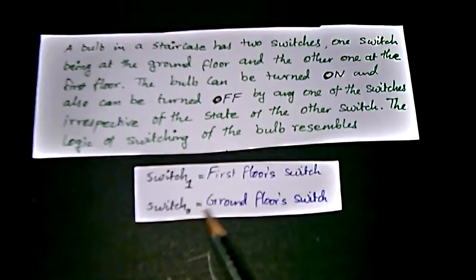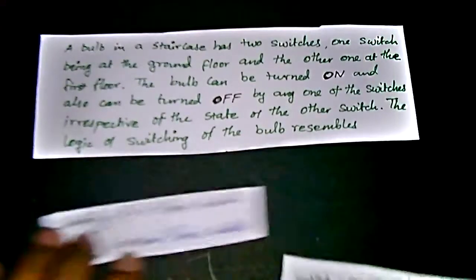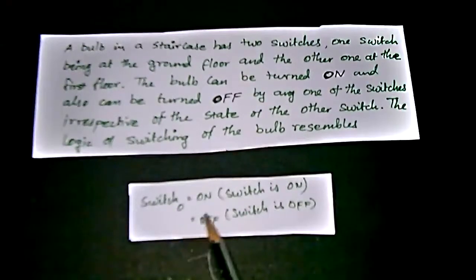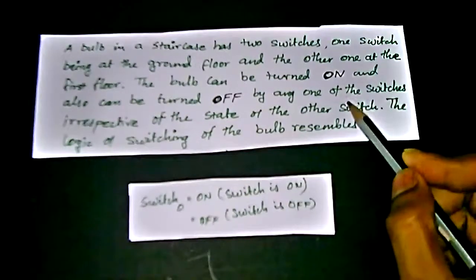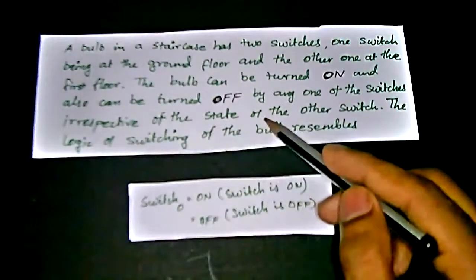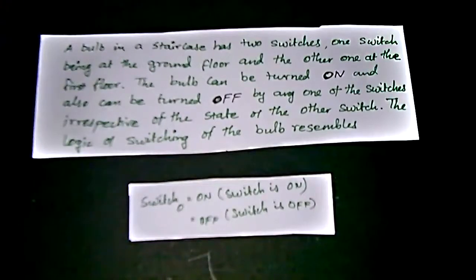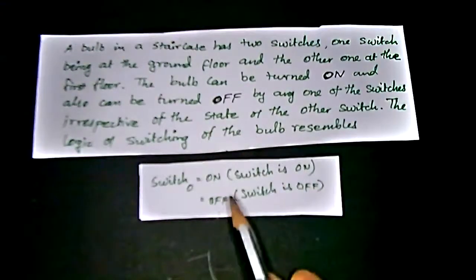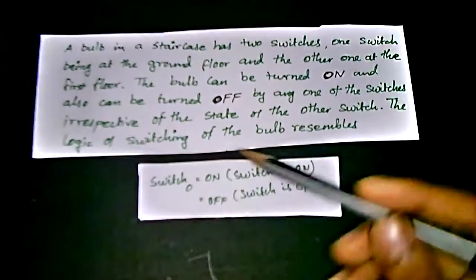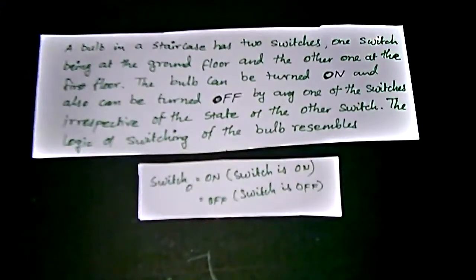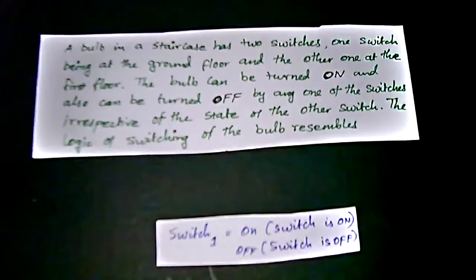We can call the first floor switch as switch one (S1) and the ground floor switch as switch zero (S0). When switch zero, the ground floor switch, is on, the lamp is on. When switch zero is off, the lamp is also off. This is the lamp state relative to the switch state.